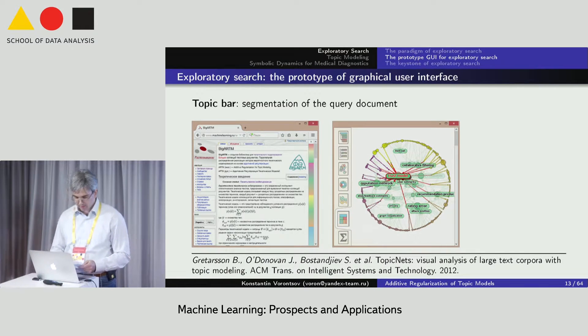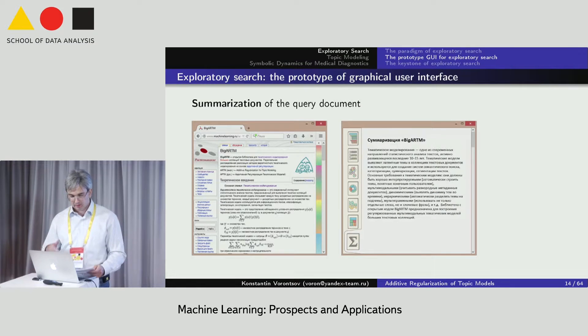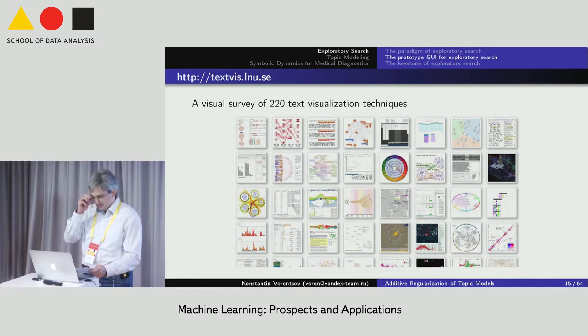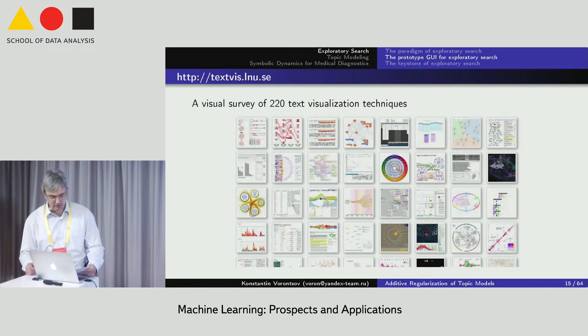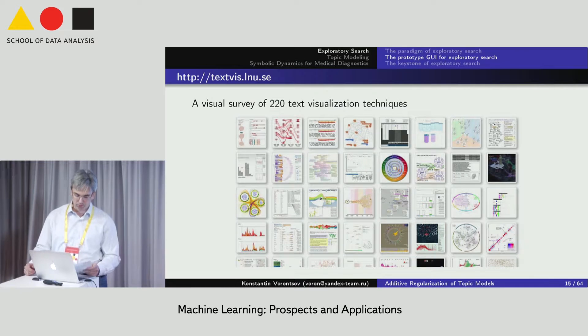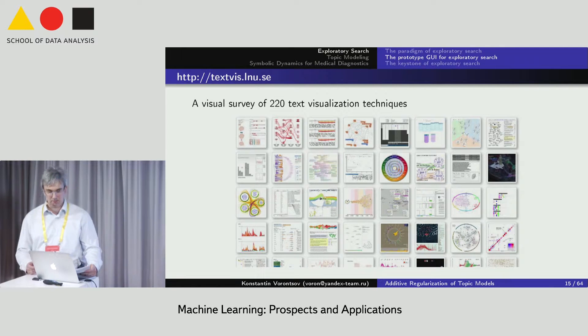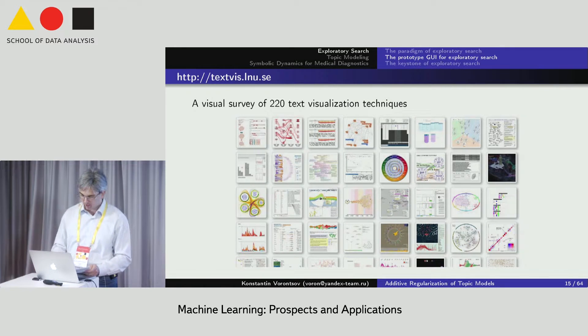Finally, the user can investigate the detailed topical structure, internal structure of the query document, read an automatically extracted summary of the query document. So, many text visualization techniques potentially useful for exploratory search are now available as ready-to-use technologies for text analysis and particularly for topic modeling of large collections.